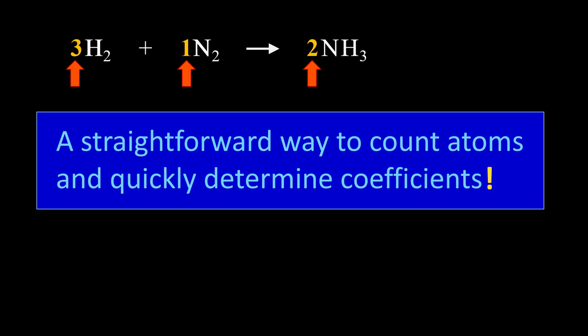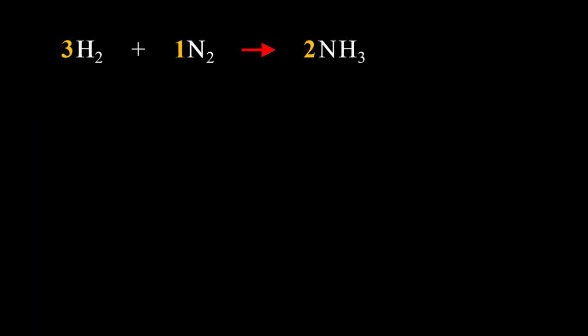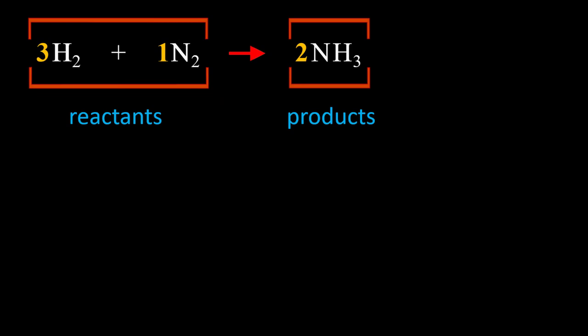Balancing an equation is finding the right coefficients that give you the same number of atoms on both sides of the arrow. The big advantage of this method is that it is very visual, so let's see how it works.